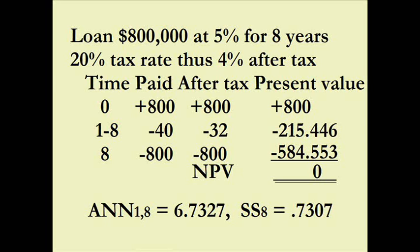Let's say we paid $50,000 down and we're purchasing it — net $800,000 at five percent, but four percent after tax because we're in the twenty percent tax bracket. At time period zero we receive $800,000 from the bank. Then in time periods one through eight we pay five percent on $800,000 — that's $40,000 — but after tax we save twenty percent, so our net outflow is $32,000 each year.